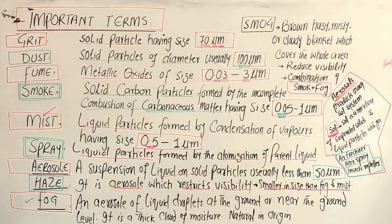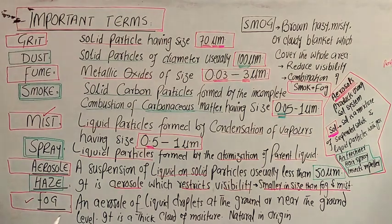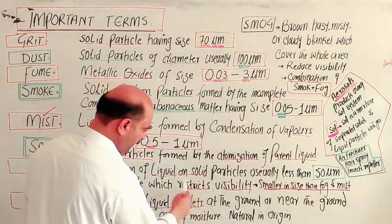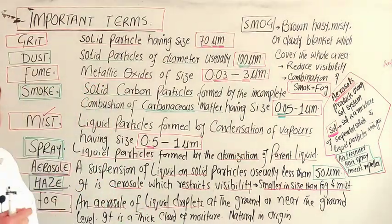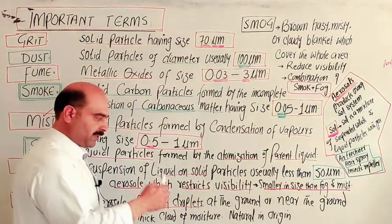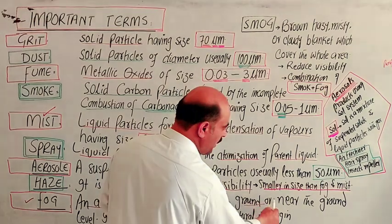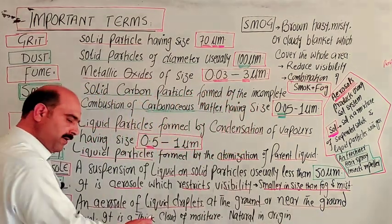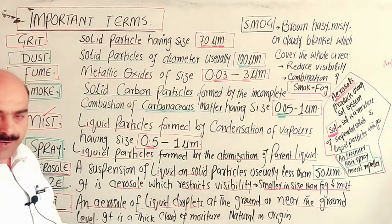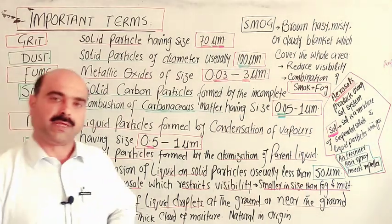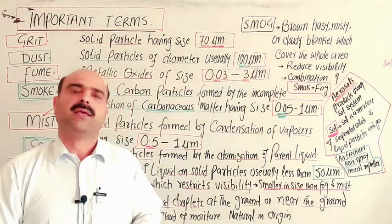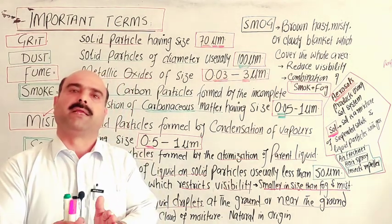Fog. Aerosol. Liquid droplets suspended in air, dispersed at the ground or near the ground level, close to ground level. Especially in December, last of January, or February, when you go outside in the morning near rivers or outside, you see fog.